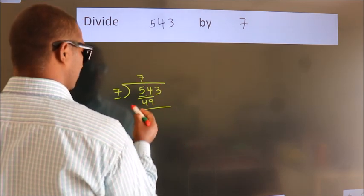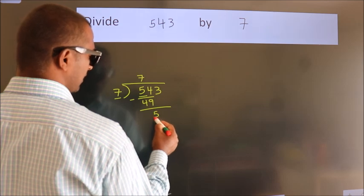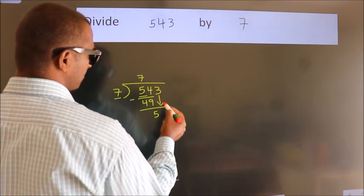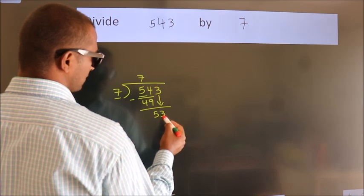Now we subtract and get 5. After this, bring down the next number. So 3 comes down, giving us 53.